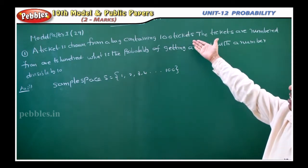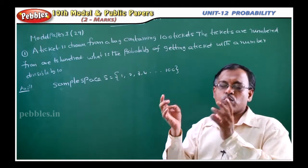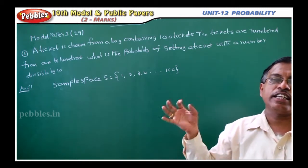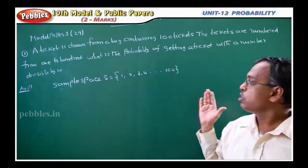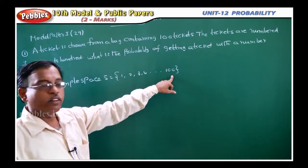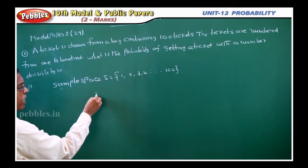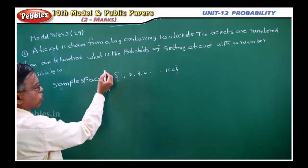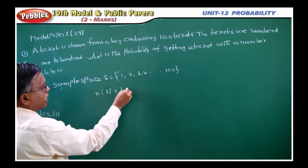A bag contains 100 tickets and they are numbered 1, 2, 3, 4, 5, 6, 7, 8, 9, 10 like that up to 100. So, sample space S is equal to 1, 2, 3, 4, 5, 6 up to 100. What is N of S? N of S is equal to how many numbers are there? 100.